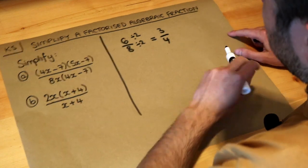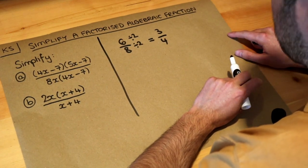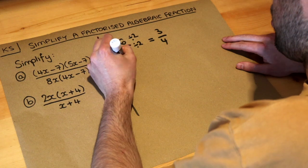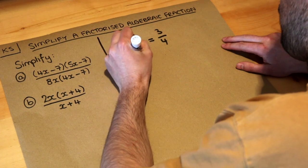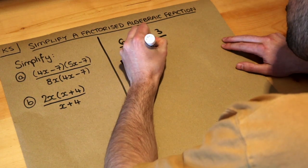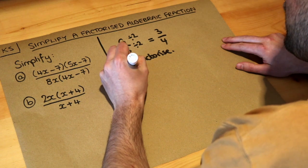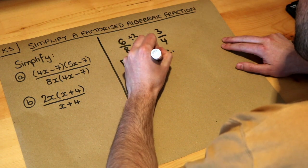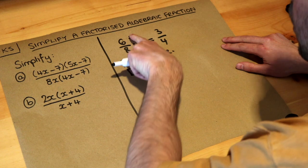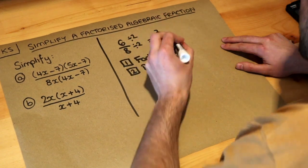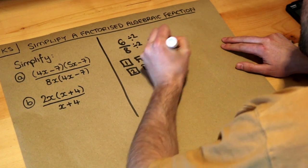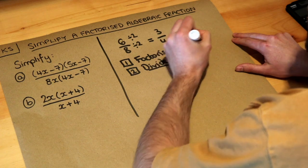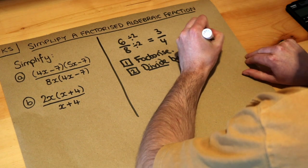So hopefully you already know how to simplify a normal fraction. Now with algebraic fractions, the method you use is to firstly factorise where possible, and secondly divide by any common factors. Just like we divide by 2 because that was a common factor, you divide by any common factors. In this case they're going to be algebraic common factors.